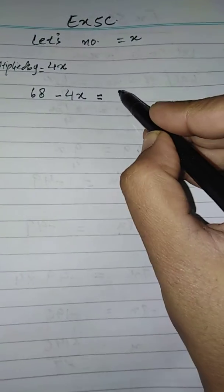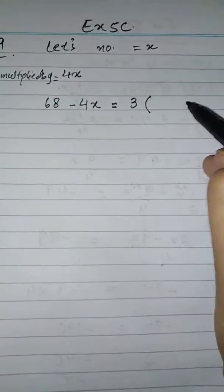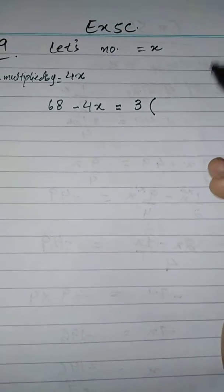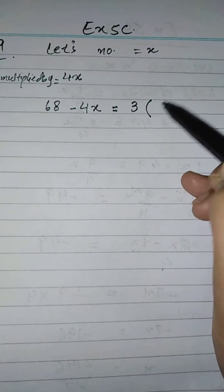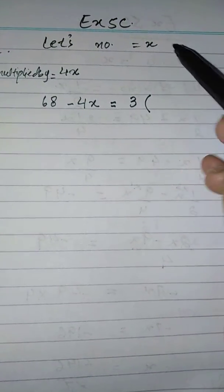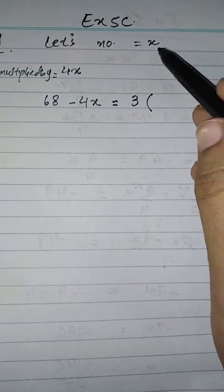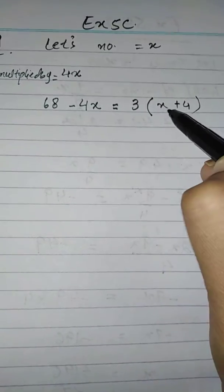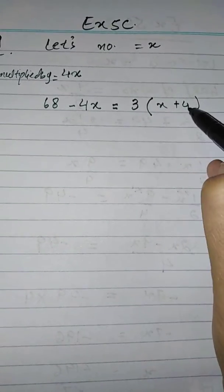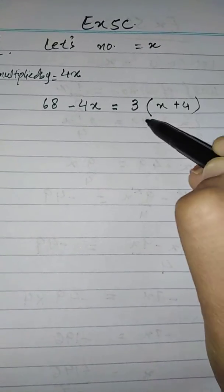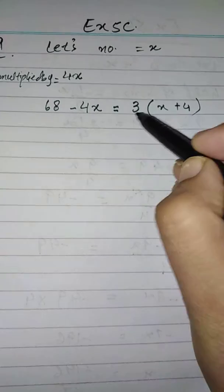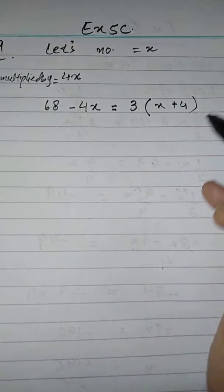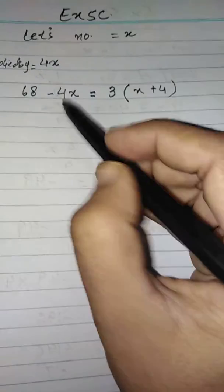Three times means that you have to multiply by three. Three times the sum of the number and four — the sum of the number and four means you have to add the number and four. So the result obtained is three times the sum of the number and four, giving us 3(x + 4).